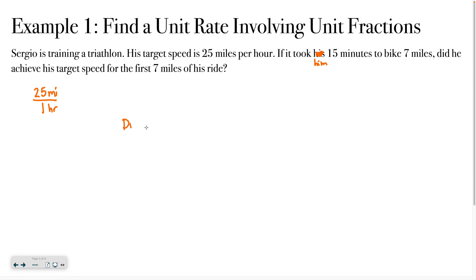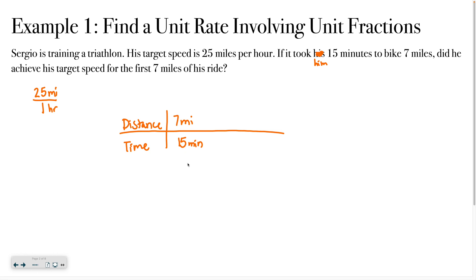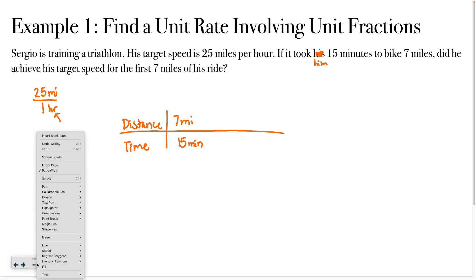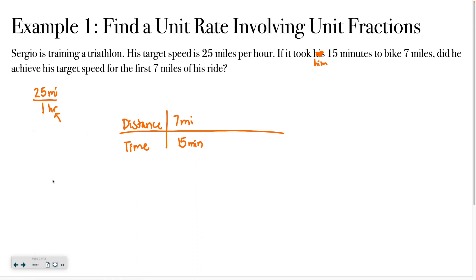Let's make a little table. What he was able to achieve was seven miles in 15 minutes. Now here is where these types of problems can get a little tricky. It's not trying to trick you — it's just trying to make sure you can pay attention to those details and do some conversions. Notice that the target speed is talking about time in hours, whereas here we were given information in minutes. So I need to figure out how much of an hour is 15 minutes.